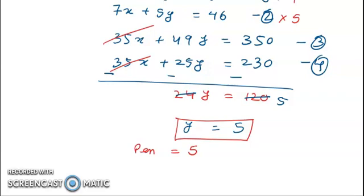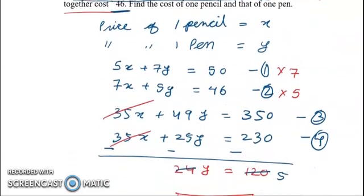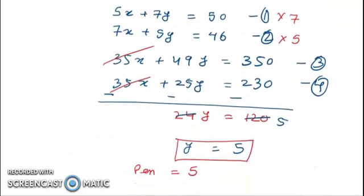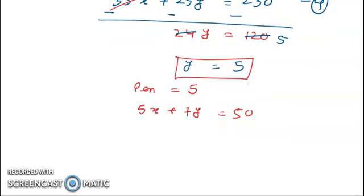We will now substitute the price of pen, y equals 5, into equation number 1. Equation number 1 is 5x plus 7y is equal to 50.